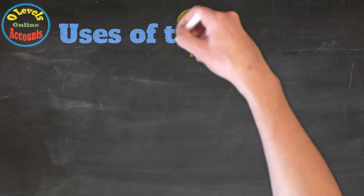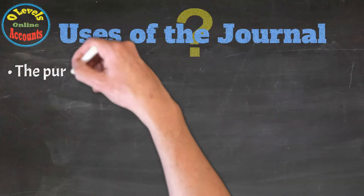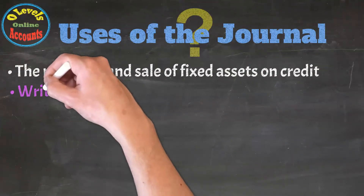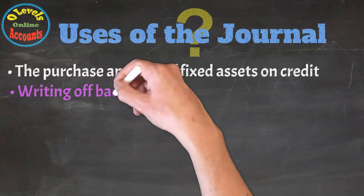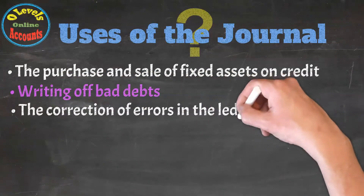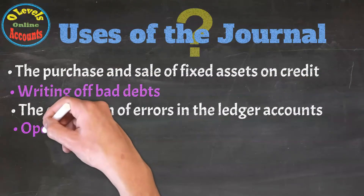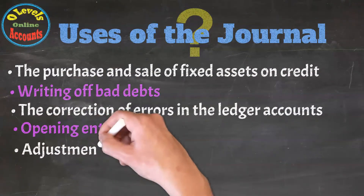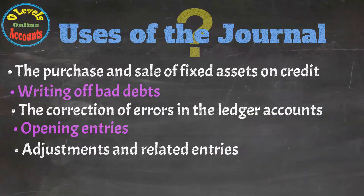Uses of the journal: it is used to record sale and purchase of fixed assets, writing off bad debts, correction of errors in ledger accounts, opening entries and adjusting entries. We will discuss each topic in upcoming videos in more detail. Here we have just jotted down the uses of the journal.